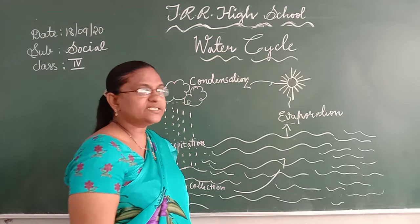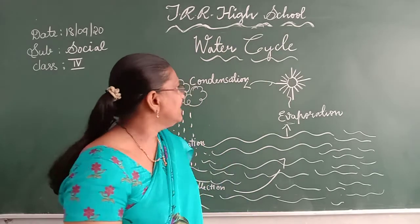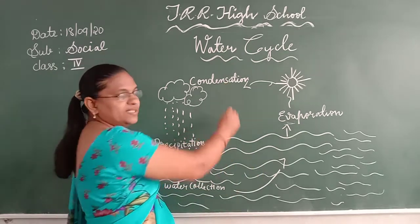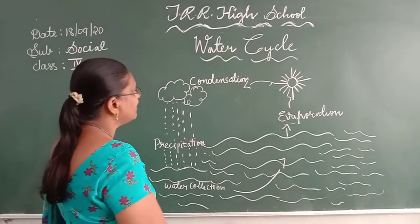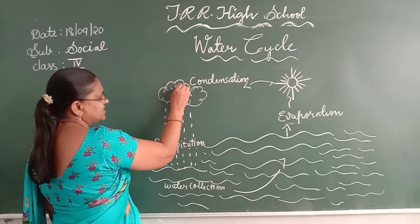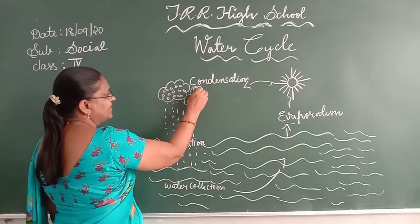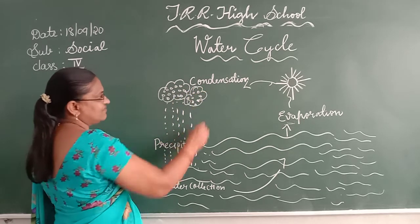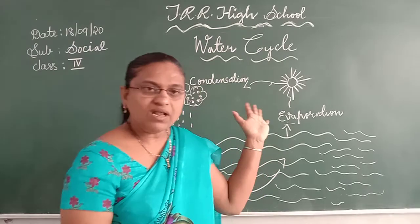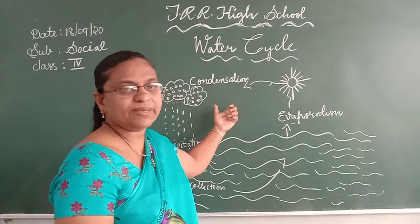After evaporation, the water vapor mixes in the air and then cools down. When it cools down, it becomes condensation. This is the second step in the water cycle.